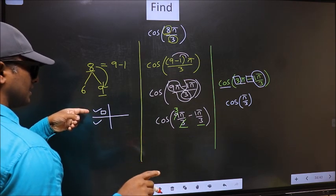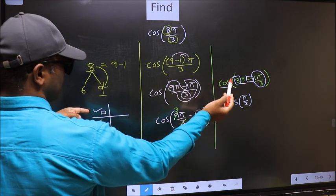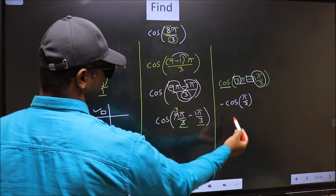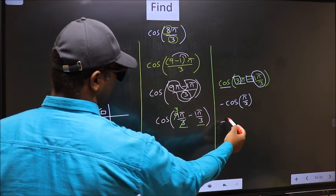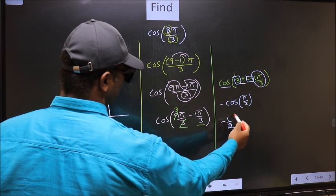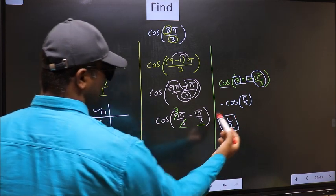That means the angle lies in the 2nd quadrant. And in the 2nd quadrant, cos is negative. So we should put negative. So negative cos π/3 is 1/2. This is our answer.